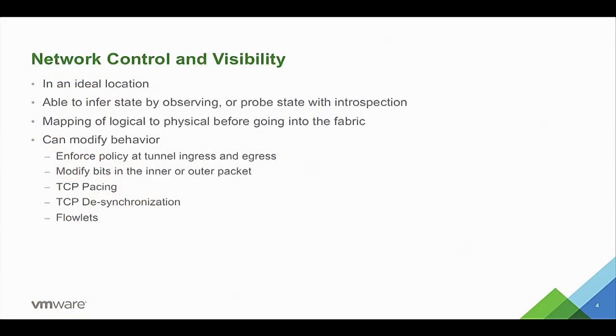This is an ideal location for network control and visibility. We're able to infer state by observing traffic as it goes by, and we also have the ability to do introspection by looking in the guest if you have a small agent running there. Also at this point in the network, if you're running an overlay network where you're taking traffic and sticking it into a tunnel, that overlay is done at the edge — so we know the mapping of logical traffic to the physical.